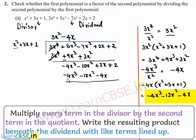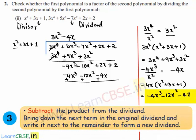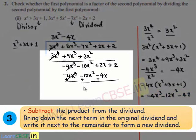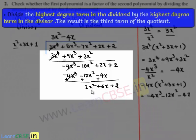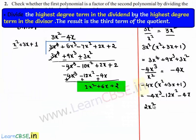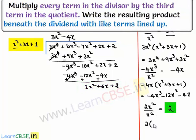On subtracting, minus 4x³ and plus 4x³ cancel. Minus 10x² plus 12x² gives 2x². 2x plus 4x gives 6x, and this is plus 2. The new dividend is 2x² plus 6x plus 2, with highest degree term 2x². Dividing by x² gives 2. So 2 multiplied by x² plus 3x plus 1 gives 2x² plus 6x plus 2.